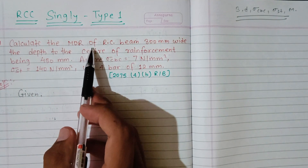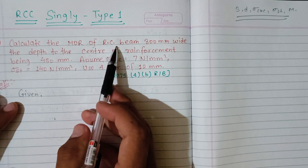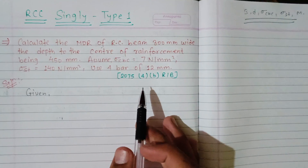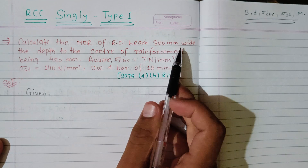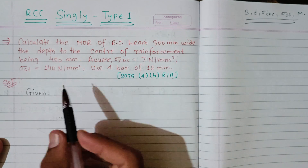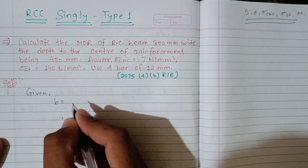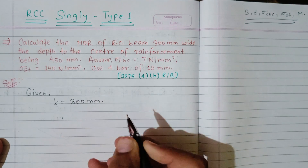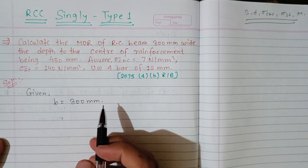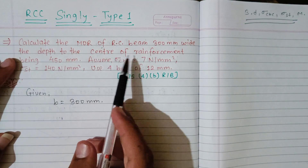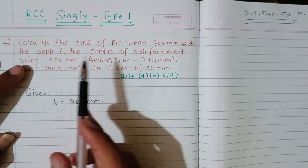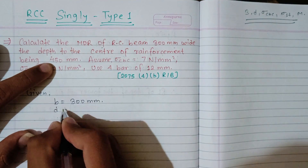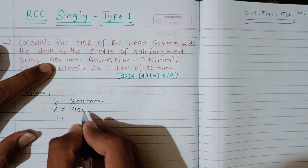Calculate the moment of resistance of the RCC beam. The beam is 300mm wide, so B is equal to 300mm. The depth to the center of reinforcement is 450mm, so effective depth d is 450mm.